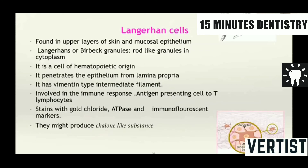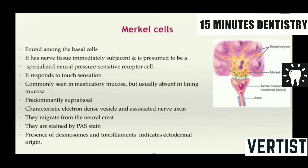The second non-keratinocytes are the Langerhans cells, found in the upper layers of the skin and the oral epithelium. These are basically antigen-presenting cells to the lymphocytes. They have a Birbeck granule which is important in them. And they can be stained by gold chloride, ATPase and immunofluorescent markers. Then the third non-keratinocytes are the Merkel cells, found in the basal cells. These are immediately subjacent to the nerve tissue and they are presumed to be specialized mechanoreceptor or pressure-sensitive receptor cells. They respond to touch sensation and are therefore found more commonly in the masticatory mucosa and usually absent in the lining mucosa. They are also originating from the neural crest and are stained by the PAS-positive stain.